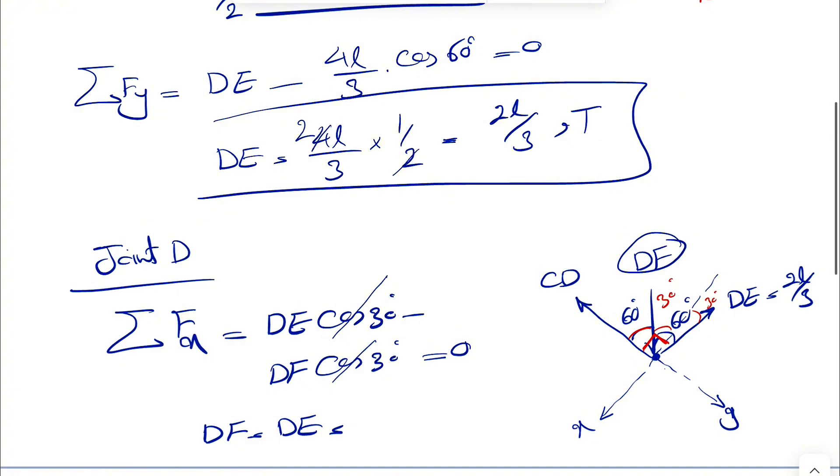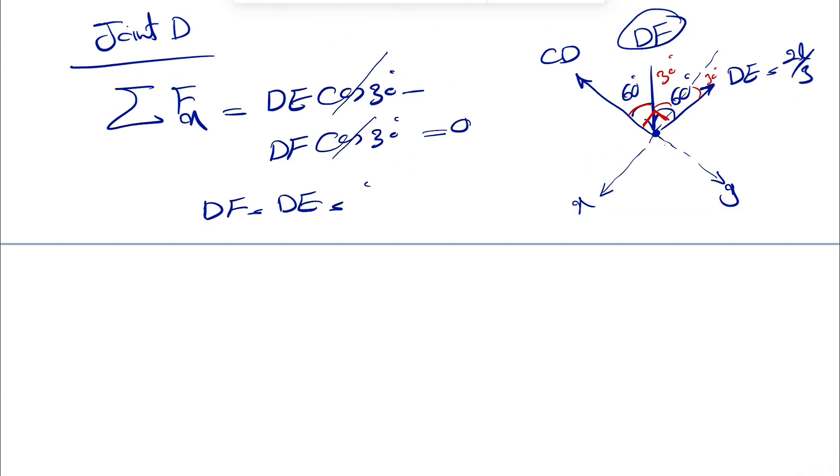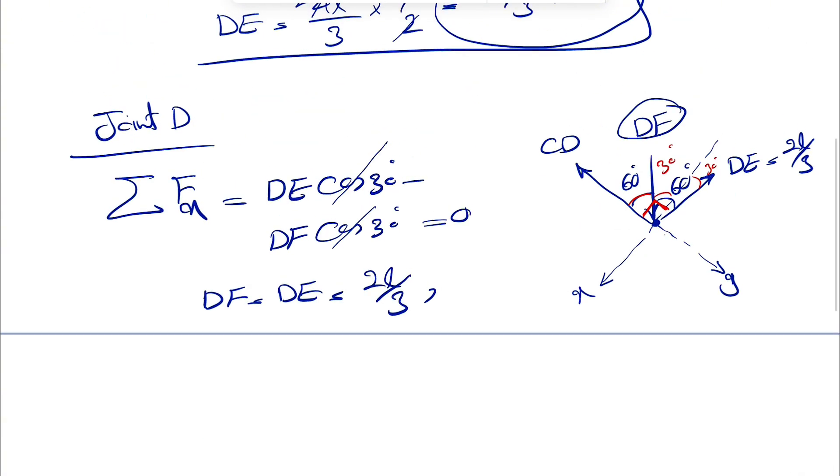And what we found for DE was two-thirds of L. And we did not get any negative sign. That shows our assumption for DF is correct. So DF in here would mean compression. So yeah, that's pretty much everything for this question. Hope everything was clear. Let me know if you guys have any questions and you guys take care. I'll see in the next video. Have a good one.